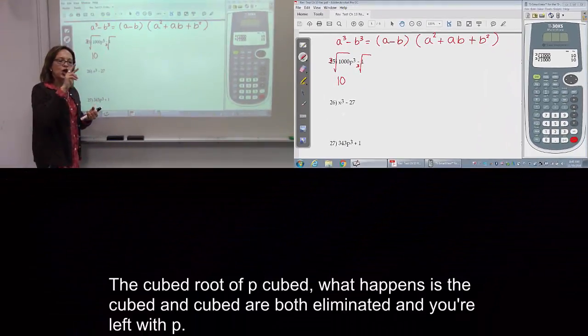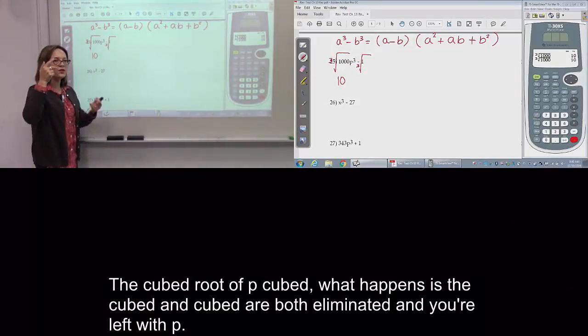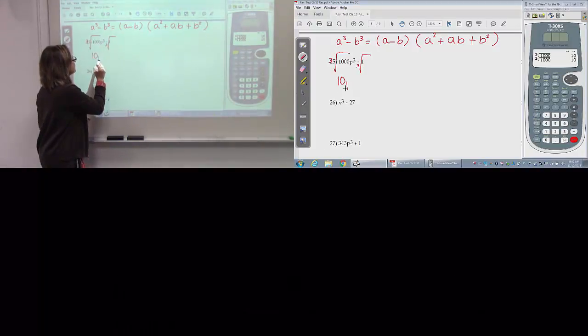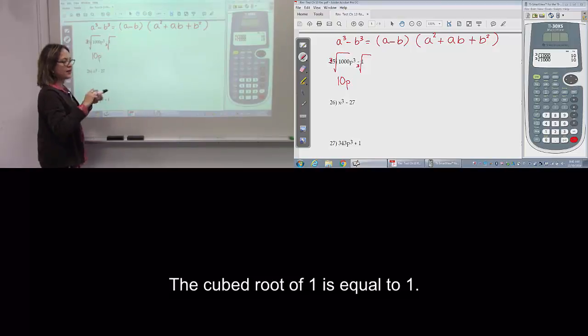Now, cube root of p cubed, the cube and the cube are eliminated. We have only p now. For 1, the cube root of 1 is 1.